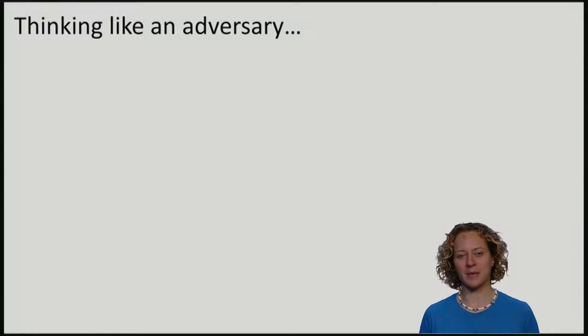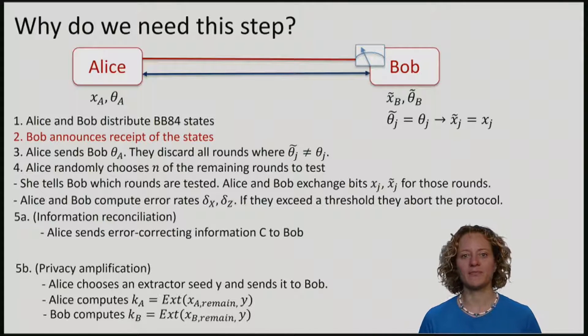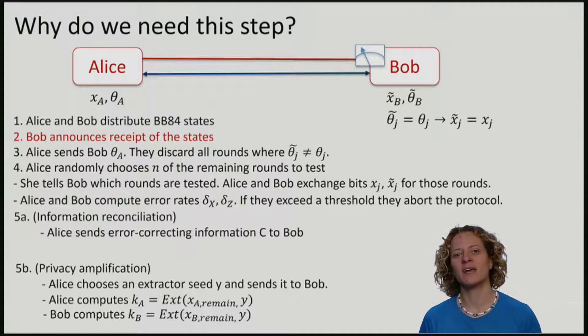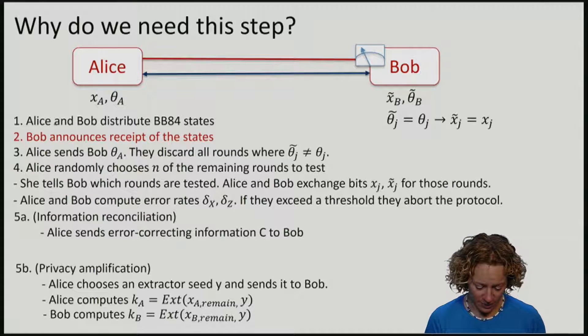For the rest of this video, imagine that you are the eavesdropper Eve. Your goal will be to learn the keys of Alice and Bob. Let me just put out the protocol again. And there was a step after we distributed BB84 states where Bob announces receipt of these states.